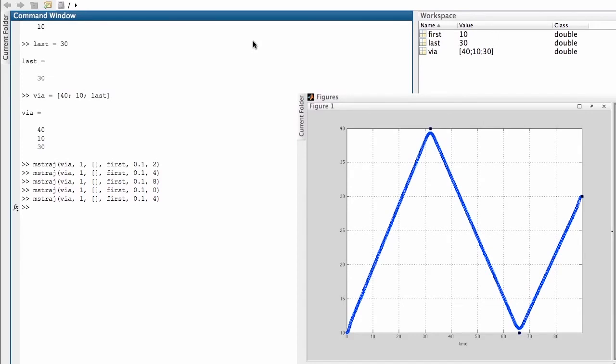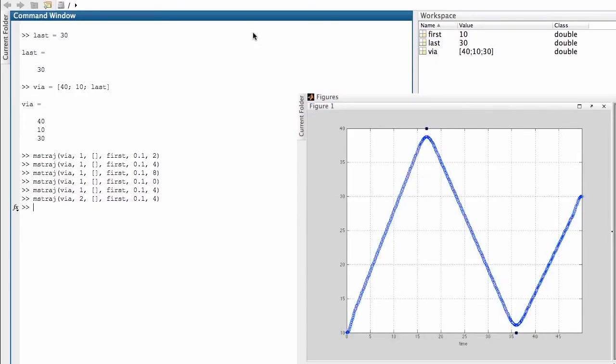And now what I'm going to do is to increase the velocity at which we move along the trajectory. You can see right now that this trajectory takes nearly 90 seconds to execute. So I'm going to double the speed at which we move along the trajectory, change the velocity from 1 to 2 and now we execute the trajectory in just under 50 seconds.